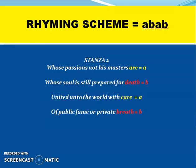For better understanding, we take one more stanza — stanza 2. 'Whose passions not his master's are' — we mark it A. 'Whose soul is prepared for death' — death is B. 'United unto the world with cure' — cure is A. 'Of public fame or private breath' — breath is B. So the words 'are' and 'cure' having the same sounds come under category A, and the words 'death' and 'breath' come under category B. These rhyming words make the rhyming scheme of the poem: ABAB.